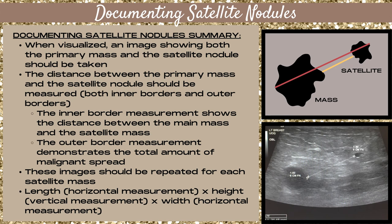You want to include irregular margins within your mass measurements, such as angular or microlobulated margins. Include any desmoplasia — a thick echogenic halo around your mass — within the mass measurements. Exclude any speculations from the measurements. The same inclusion and exclusion criteria apply to the satellite nodules.